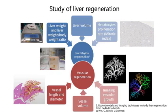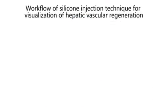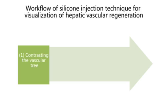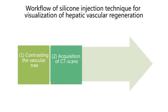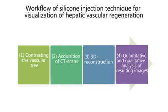Nowadays, we are interested in vascular liver regeneration in mice and want to visualize and quantify vascular growth. Thus, we established a workflow for imaging vascular regeneration. The workflow consists of four steps: contrasting the vascular tree, acquisition of CT scans, 3D reconstruction, and quantitative and qualitative analysis of resulting images.